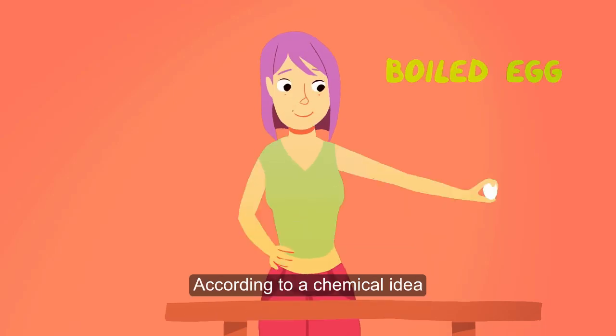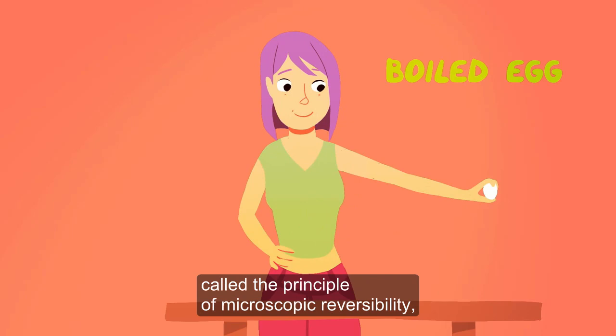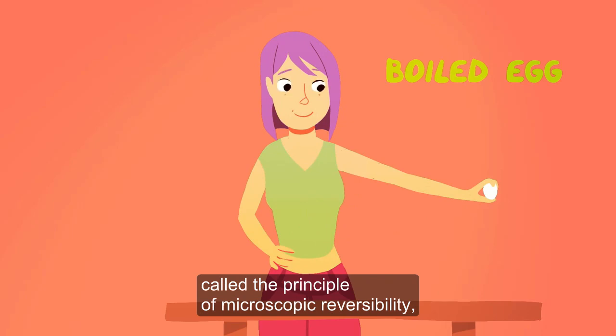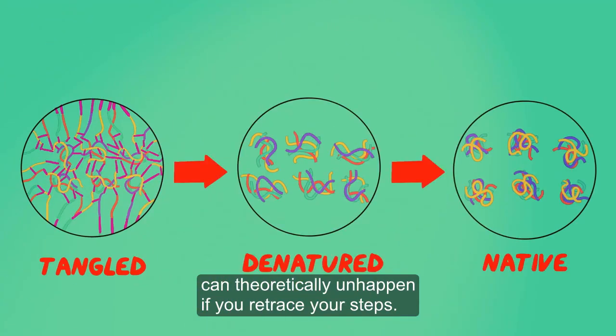According to a chemical idea called the Principle of Microscopic Reversibility, anything that happens, like egg proteins seizing up, can theoretically unhappen if you retrace your steps.